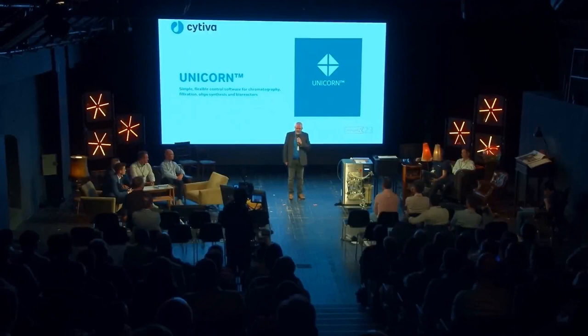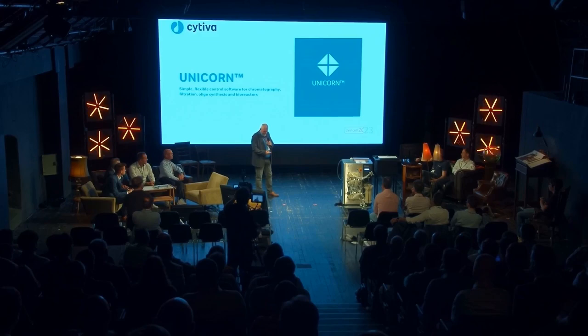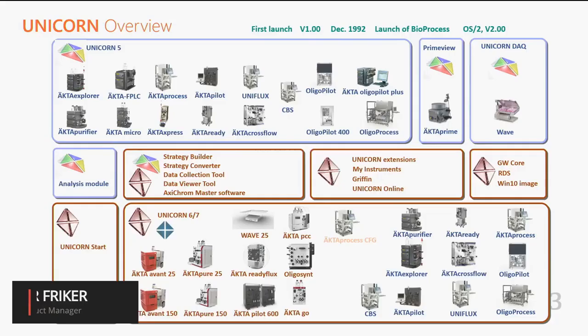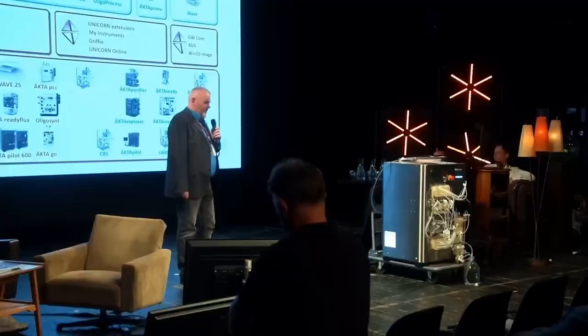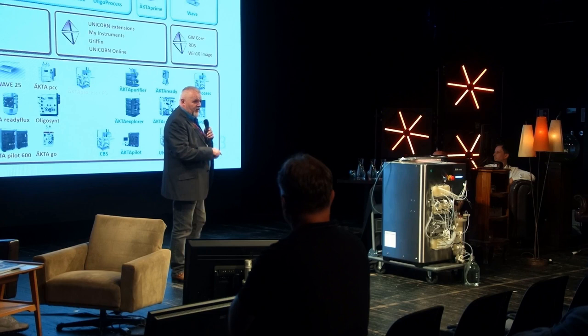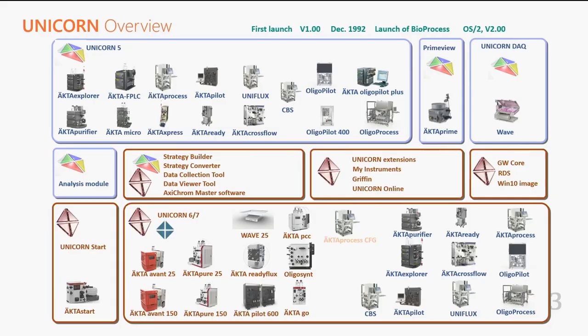My name is Olivier Friquer, global product manager for Unicorn, which is the control software for Cytiva. The first version was released in 1992, so we have 30 years of experience in digital and computerized control and data acquisition. With Unicorn 6 we made a complete re-haul. Today, Unicorn controls more than 20 different systems, not counting all the configurations available in some of those systems.